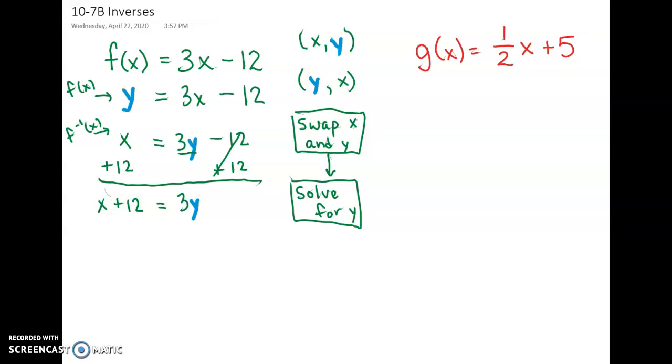We're not done solving for y yet because we don't have y by itself. We have a 3 times y. So in order to get rid of 3 times y, we're going to divide both sides by 3.